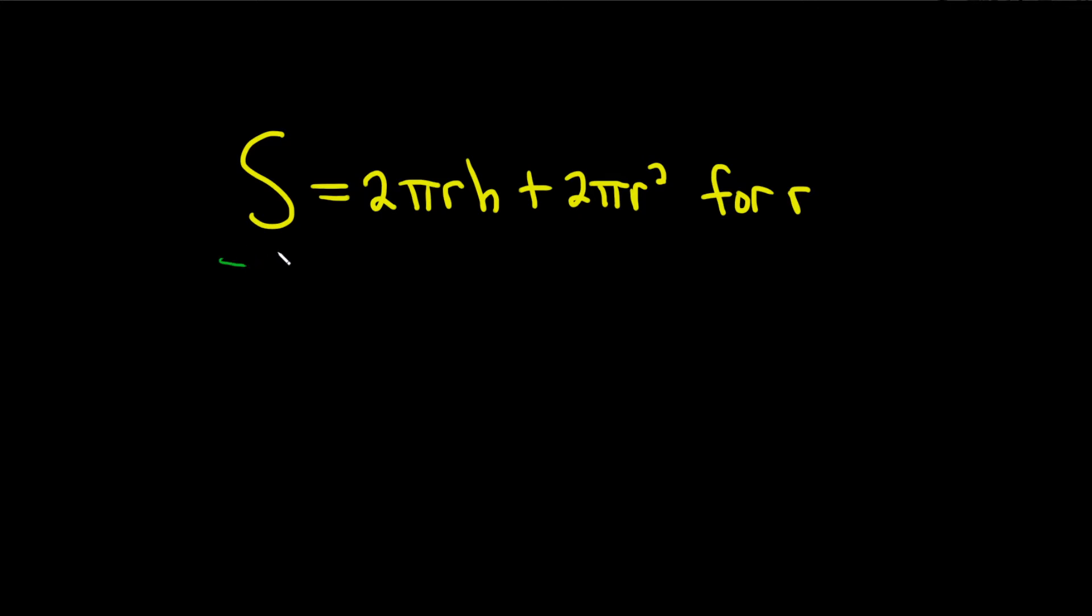So if we subtract s from both sides, let's write it like this: 2πr², that's like our x squared except it's r, plus 2πh times r, then minus s, and that's equal to 0.